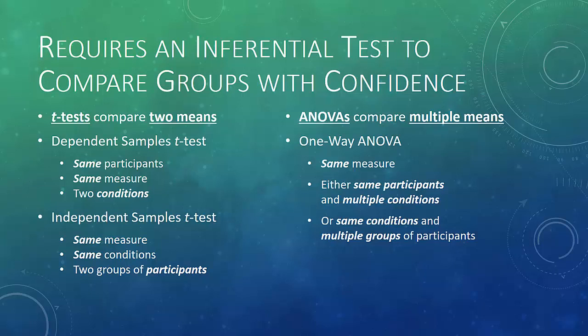Ultimately, we need an inferential test to compare groups with any confidence. If you directly compare the means of any two groups, there's no way to be sure that the differences you're observing are not due to sampling variation. Because I picked these 10 people instead of those 10 people, suddenly Mediterranean participants appear to have a higher body weight than U.S. folks, and if I select a different group, it switches. That's what we call sampling variance.